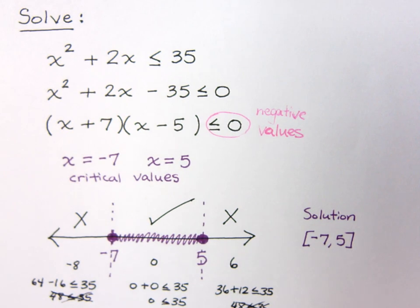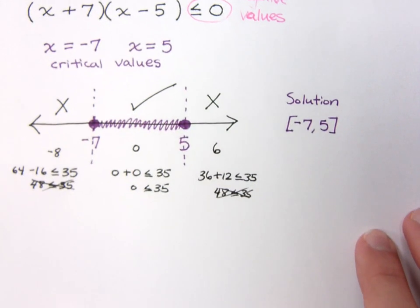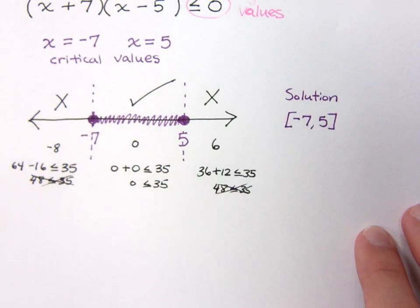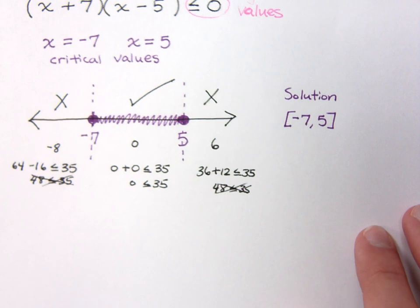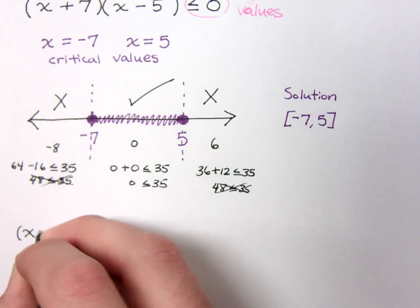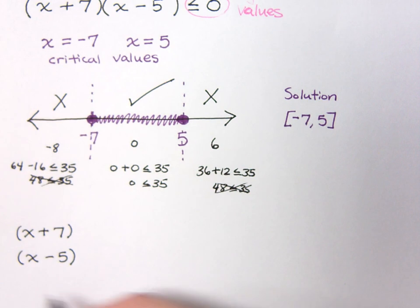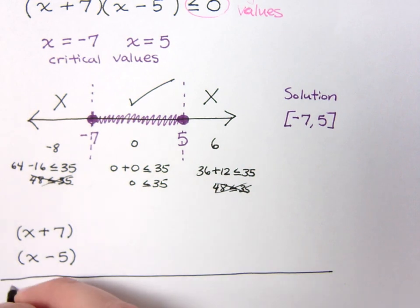Now, there's another way that we can check this guy, and that's by using what I call a sign table. So, keep in mind what our critical values are and what the factors are that we're working with. We're working with the factors x plus 7 and x minus 5. So, here's how we're going to do this. I'm working with the factors x plus 7 and x minus 5. And then, eventually, I'm going to see what happens whenever I combine these guys and I look at their product.